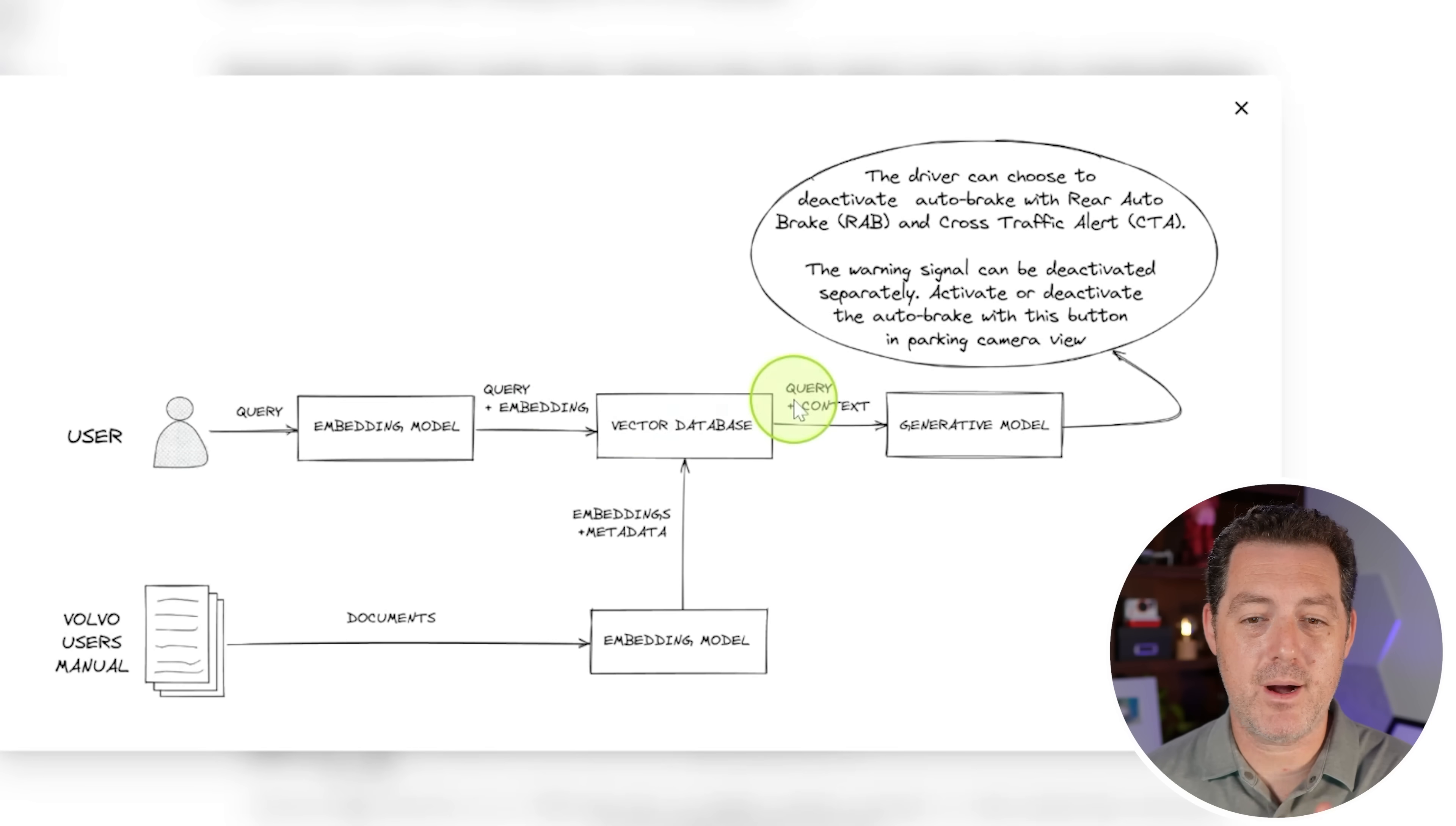And then we can combine the original query plus all of this additional context or knowledge, send it to the model, and then we actually get a relevant, accurate answer. The driver can choose to deactivate auto brake with rear auto brake and cross traffic alert. The warning signal can be deactivated separately, and so on. And so now we have non-hallucinated accurate information because we were able to give our large language model an external knowledge source.